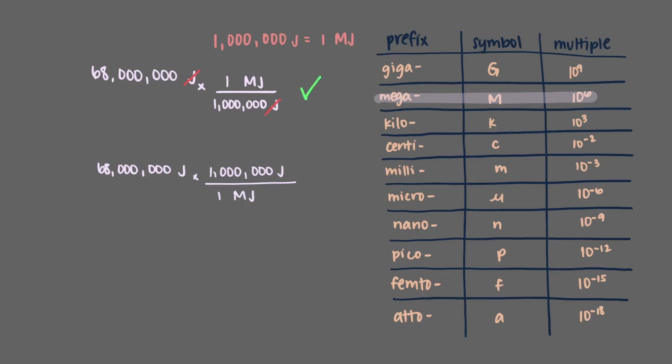Here, on the other hand, joules are in the top twice, and so they do not cancel out. So that's not right. It's important to always include units throughout all of your work. That will save you from making these mistakes. We see that 68 million joules is equivalent to 68 megajoules.